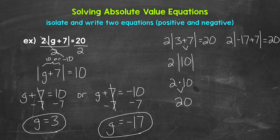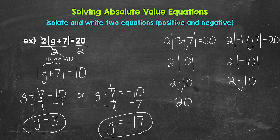Now let's do 2 times the absolute value of negative 17 plus 7. Negative 17 plus 7 gives us negative 10, so we have 2 times the absolute value of negative 10. The absolute value of negative 10 is 10, so we have 2 times 10, which is 20. So we are correct there as well — g equals negative 17. Our two solutions for this example are 3 and negative 17.